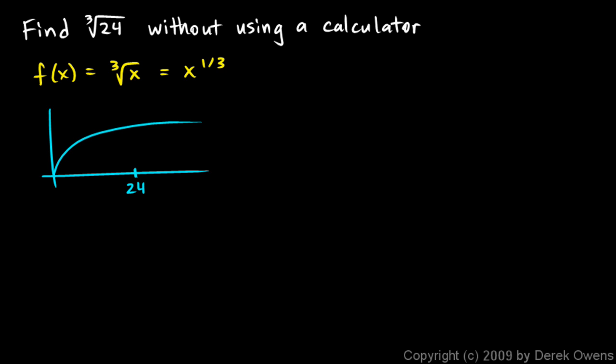Well, that's hard to find. But the cubed root of 27 is pretty easy to find. The cubed root of 27 is just 3, and we know that.